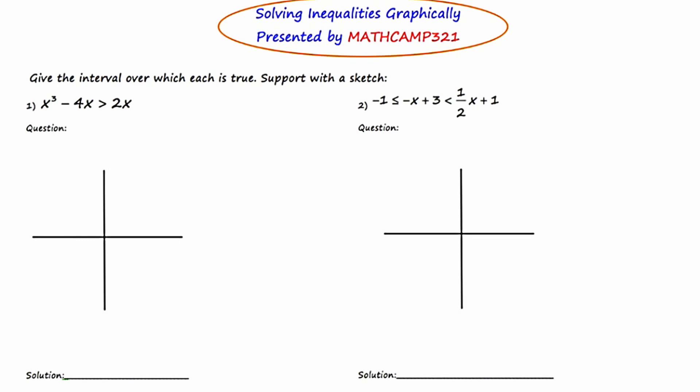The directions say to give the interval over which each is true, supported with a sketch. Question number one says x cubed minus 4x is greater than 2x. Now a question like this is really complicated from an algebraic standpoint, but what I'm going to show you is how to solve it graphically. You don't even need to know how to do the algebra in order to get the answer — you just have to be able to follow the steps I'm going to show you right here.